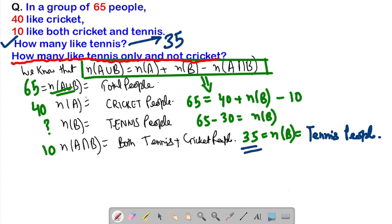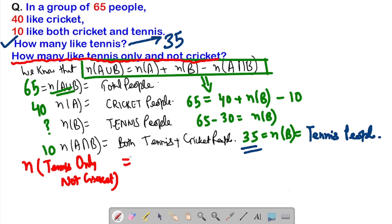Now the second part of the question is: how many people like tennis only and not cricket? Those people come out of the category of 35 tennis-playing people. The number of people who play tennis but not cricket will be represented as n(B - A), because B is tennis people and A is cricket people.